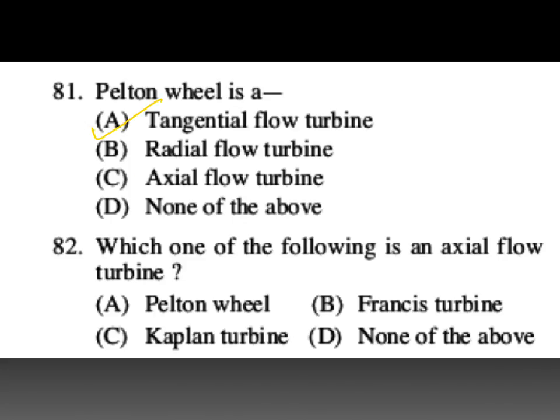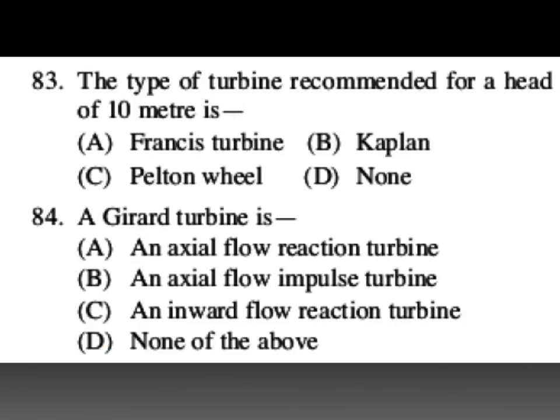Which one of the following is an axial flow turbine? Axial flow turbine is Kaplan turbine. Pelton wheel is tangential flow, Francis is mixed flow, and Kaplan turbine is axial flow.